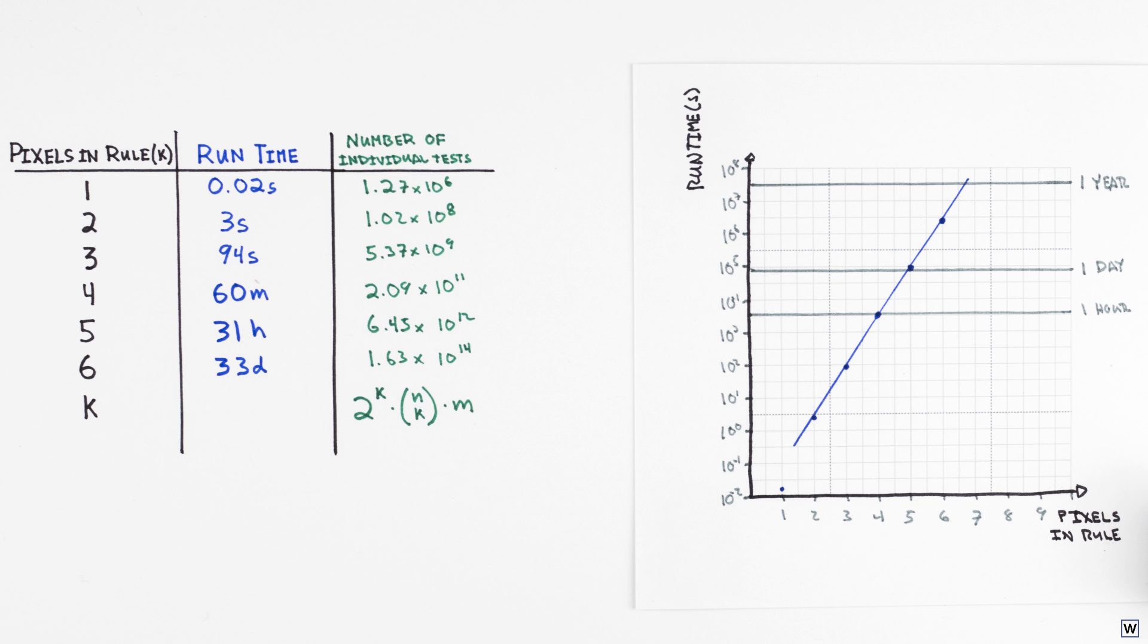Now that we have a better handle on just how bad things are, let's consider if there's a way out of this mess. Could there be a different approach to our problem that doesn't scale so terribly? Is this the best we can do?